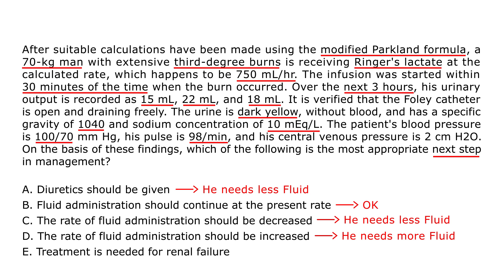There's nothing to indicate renal failure since the patient is still producing urine. Looking at urine output: normally an adult should produce 30 to 50 mLs per hour, or using the formula, 1 mL per kg per hour — that's 70 mLs per hour for a 70 kg man. He's producing far less than that after the burn, meaning he's not getting enough fluid. Therefore, the answer is D — increase the rate of fluid administration.